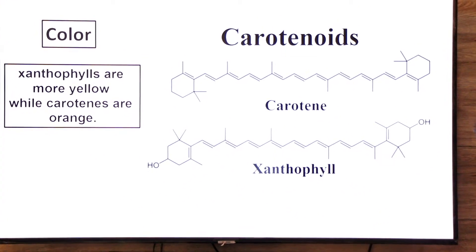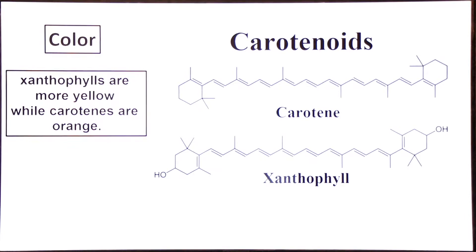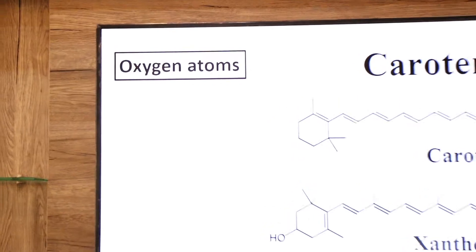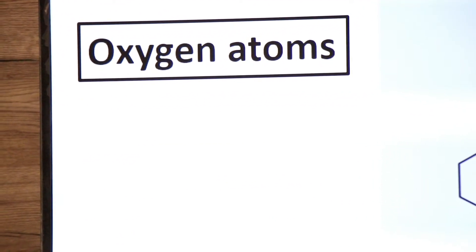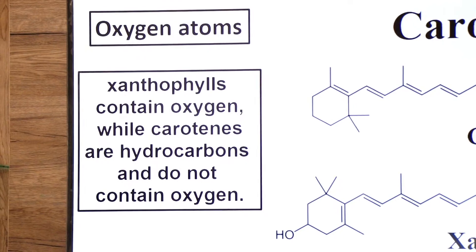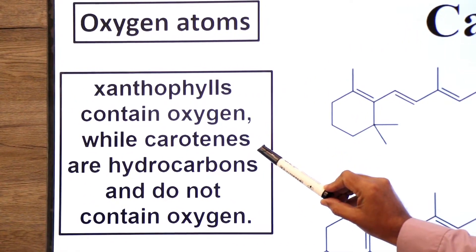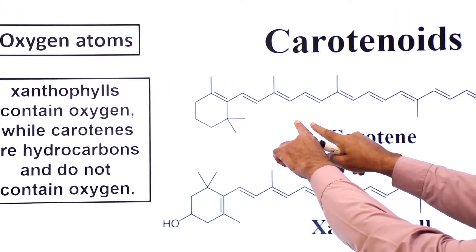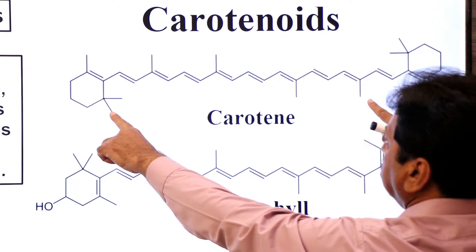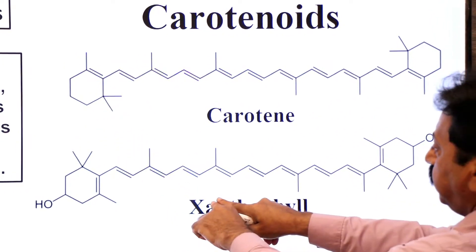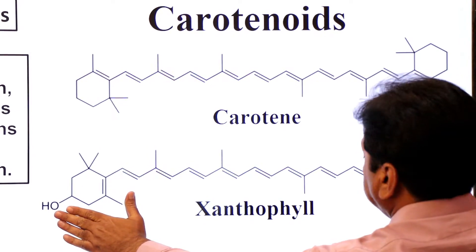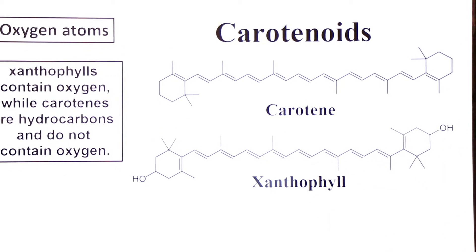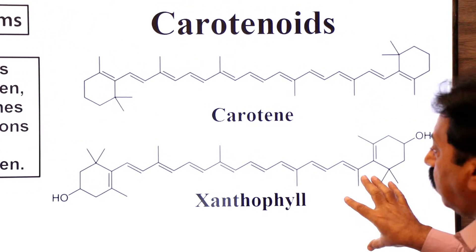Let's look at the difference between carotenes and xanthophylls. The difference is in oxygen atoms. Xanthophylls contain oxygen while carotenes are hydrocarbons and do not contain oxygen. You can see in the structure of xanthophylls the presence of oxygen atoms.